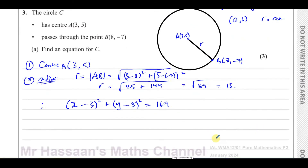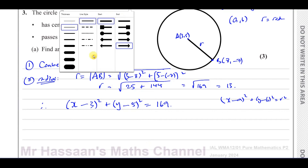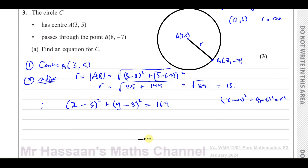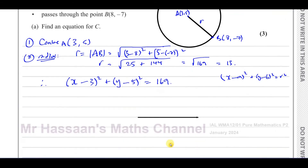Some people might wonder: why is x minus a squared plus y minus b squared equals r squared the equation for a circle? I'm going to go through a little explanation for those of you who didn't maybe understand that. Those of you who are okay with this and understand it — fine. Those of you who didn't and want to know, you can carry on watching.